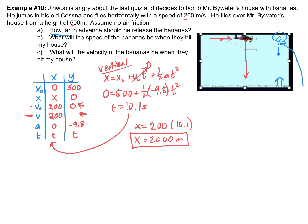Letter B asks: what will the speed of the bananas be when they hit my house? We can use the same information from our table, and now we actually have t = 10.1. One thing to keep in mind — it's asking for speed when they hit the house. When they hit the house, the bananas are going to have some vertical velocity because they're dropping, but they're also going to have horizontal velocity, which we already know is 200 meters per second. In the absence of air friction there's no horizontal acceleration, so the bananas continue forward at 200 m/s. What I need here is the vertical velocity VY.